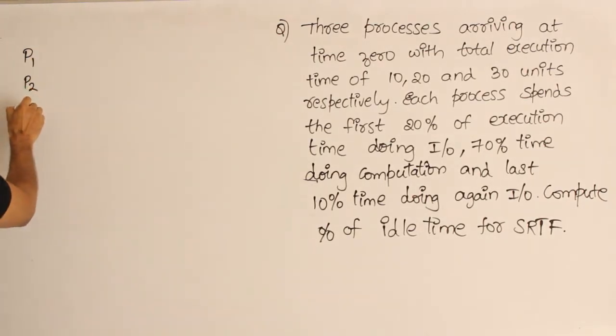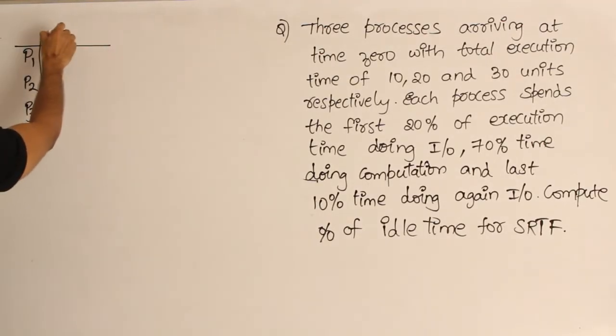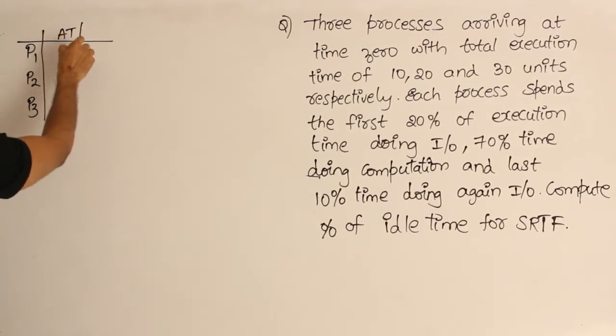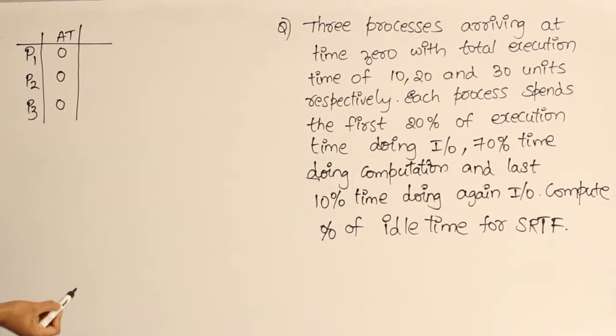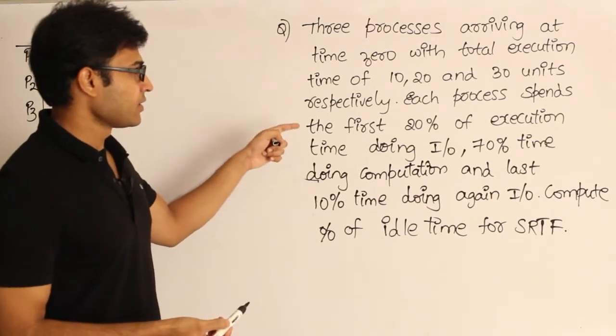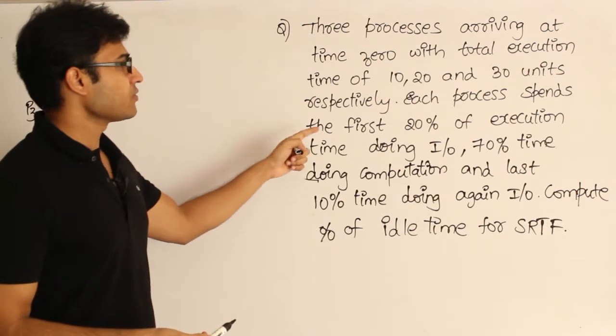P1, P2, and P3 are available. Their arrival times are 0, 0, and 0, and their burst times, which means execution times, are 10, 20, and 30. Each process spends the first 20% of execution time doing I/O.